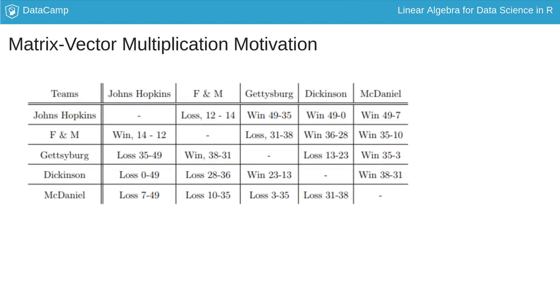An example where matrix vector multiplication is used is the ranking of entities like sports players or teams. Here's an example of a table of outcomes in college football. This is a relatively small example with just five teams yielding a matrix with five by five or 25 elements. In the exercises you'll deal with a 12 team league which yields a matrix of 144 or 12 times 12 elements.